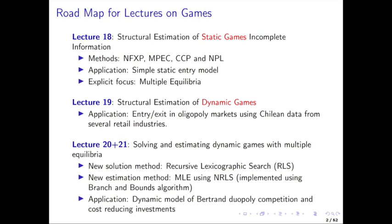Then MPEC, which is a constrained optimization approach to structural estimation. Rather than computing all the equilibria every time you evaluate the sample criterion, it imposes the relevant equilibrium conditions as constraints in the constrained optimization problem. Here the constraints would be the Bayesian Nash equilibrium equations requiring that the two players' best response functions are mutually best responses. The difference from NFXP is that rather than actually calculating the solution, MPEC imposes those as constraints, not necessarily finding all the equilibria while searching for the parameters.